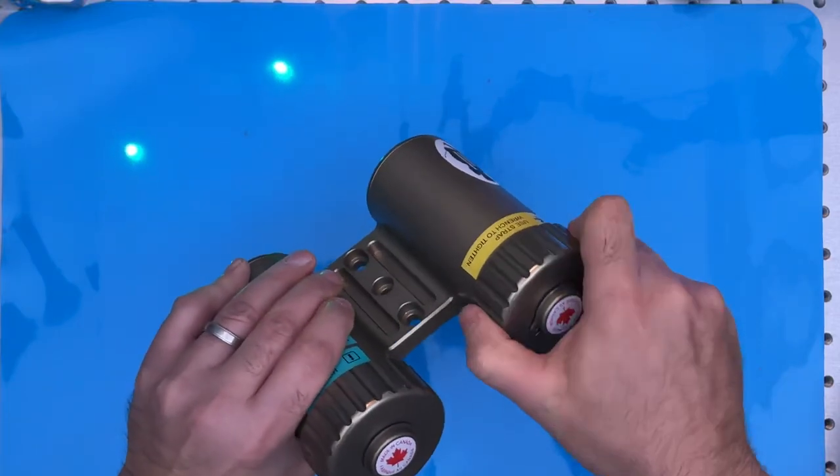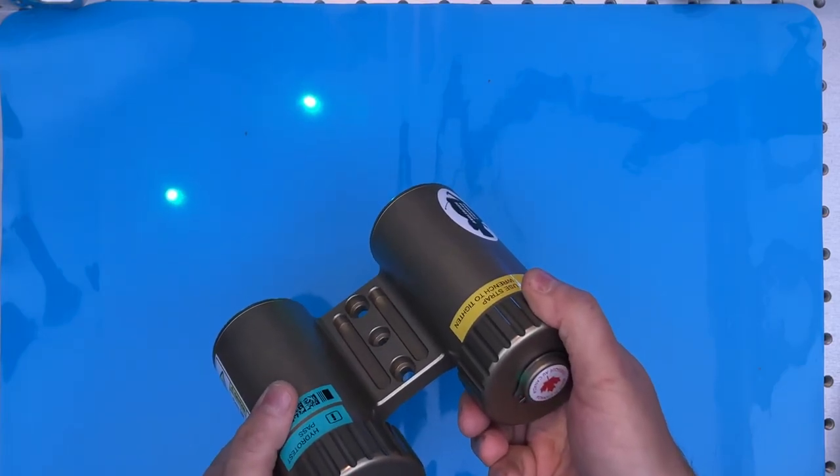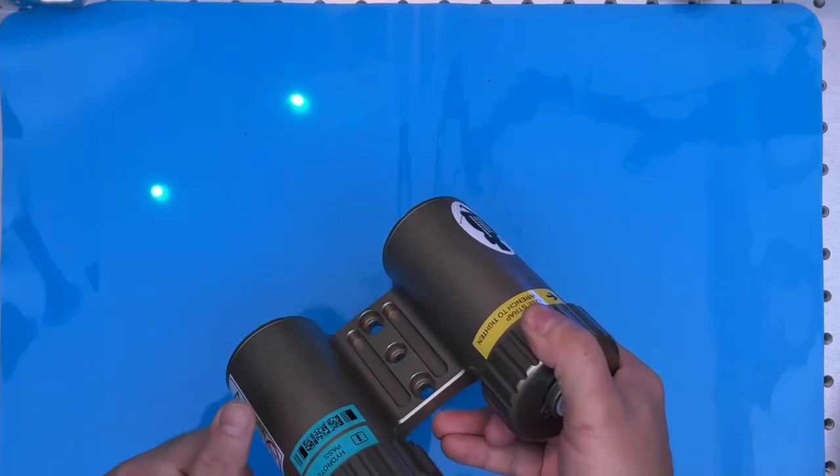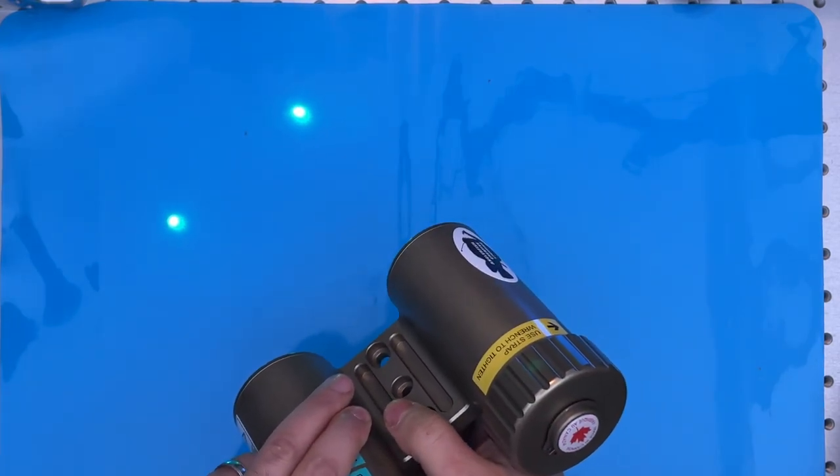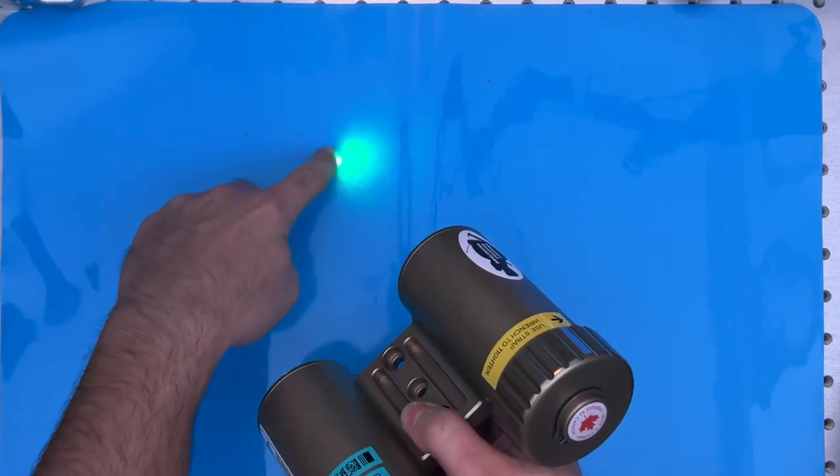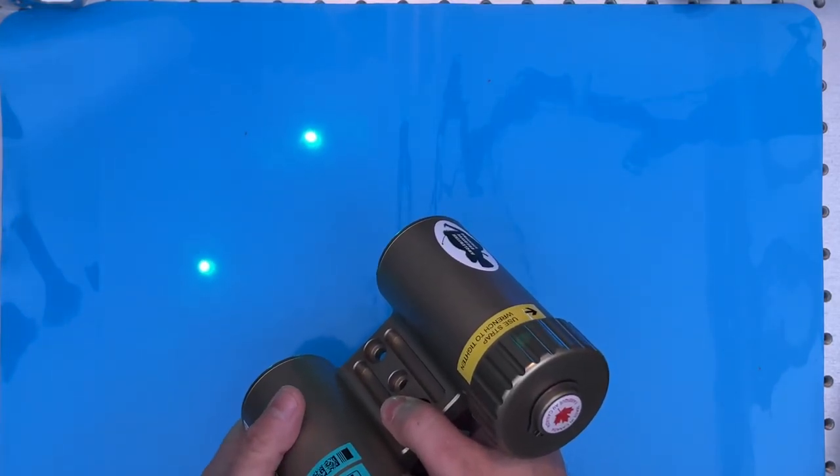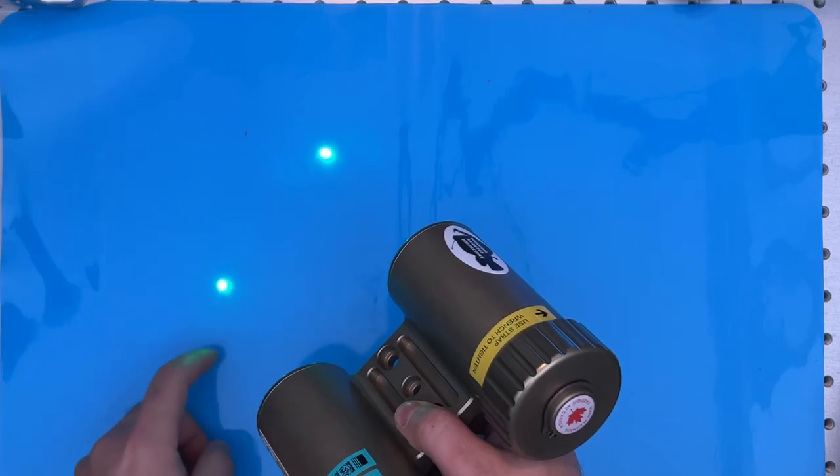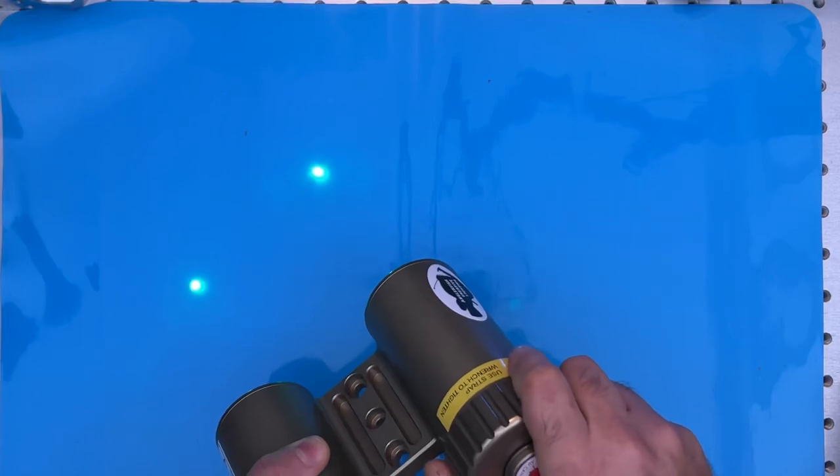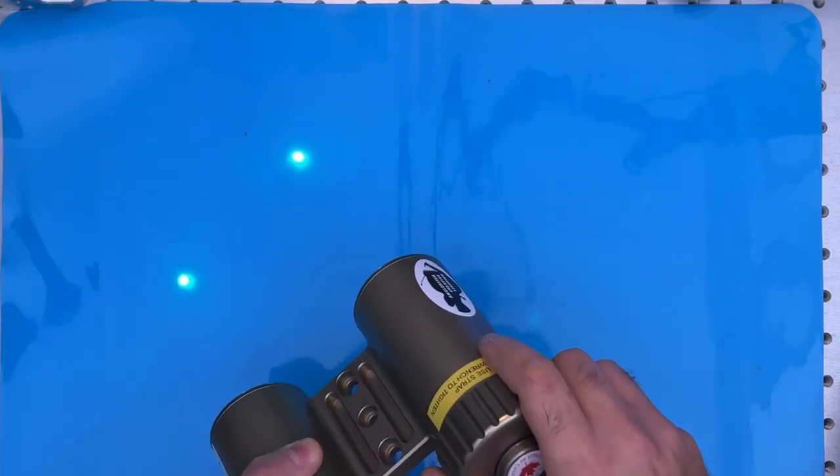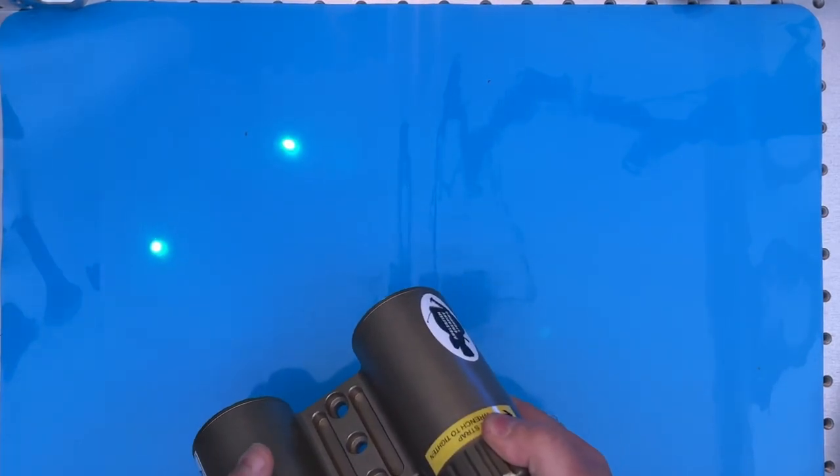If you're taking a video of something and pointing this laser module at the subject, and you want to know the length of that object, you can simply measure this length and the length of the subject. Using the rules of proportionality, you can figure out how large the object is underwater. These two points are exactly 100 millimeters apart.